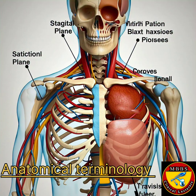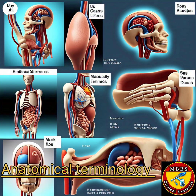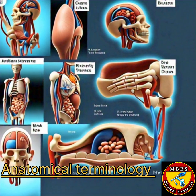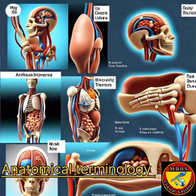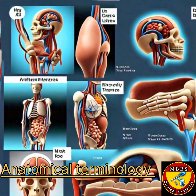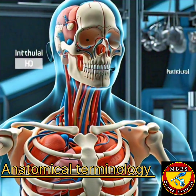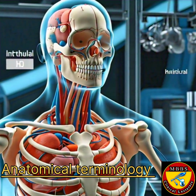Anatomical Positions. 1. Anatomical Position – The body stands upright with feet shoulder-width apart, facing forward, and hands by the sides with palms facing forward.